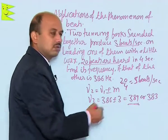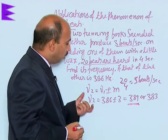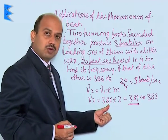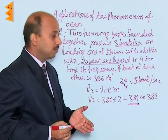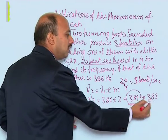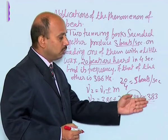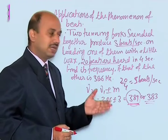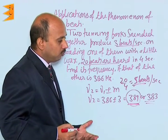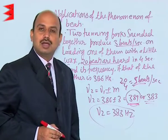Suppose we take nu2 as 389. When it is loaded with wax, its frequency decreases toward nu1 of 386, so the number of beats would also decrease. But in the question, the number of beats is increasing after loading, so 389 is not possible. When we take nu2 as 383 and load it with wax, its frequency decreases further away from 386, so the number of beats increases — which matches the question. Therefore, nu2 equals 383 Hz. This is how we calculate the unknown frequency.